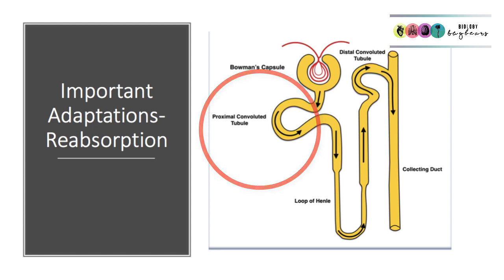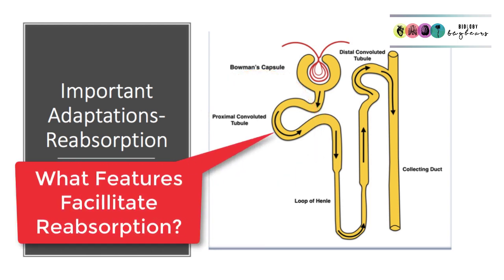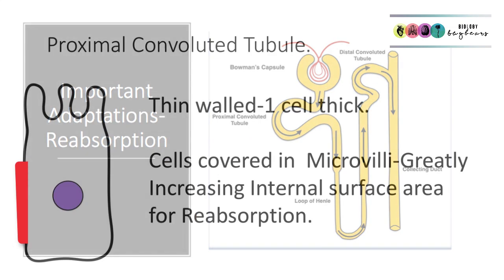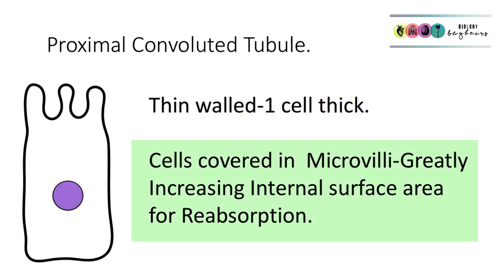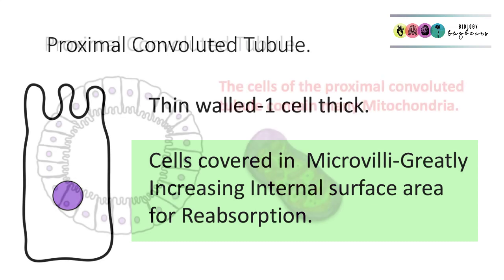So how is the proximal convoluted tubule adapted to reabsorption? The walls of the proximal convoluted tubule are very thin — only one cell thick. The cells are covered in microvilli, these little projections, which greatly increases the internal surface area for the reabsorption of materials.